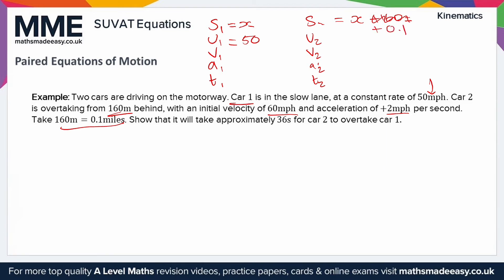We've got U1 is 50. V1 will also be 50 because it's a constant rate, so it doesn't get any quicker, it doesn't get any slower. A then will be 0 because that's the acceleration of the first car, and again if it's a constant rate, it's not changing, so acceleration must be 0. T we'll set equal to T. What else do we know about car 2? Well it's starting at 60 miles an hour. Final velocity we don't know and we don't really care. But we do know A2 is 2.